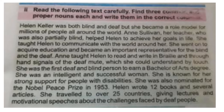Find three common and three proper nouns each and write them in the correct columns. Helen Keller was born blind and deaf, but she became a role model for millions of people all around the world. And Sylvan, her teacher who also was partially blind, helped Helen to achieve her goals in life. She taught Helen to communicate with the world around her. She went on to acquire education and became an important representative for the blind and the deaf. She was also nominated for the Nobel Peace Prize in 1953.